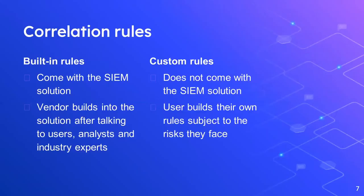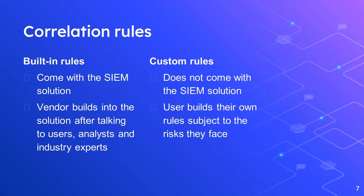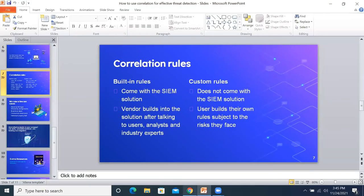Correlation rules are critical — your SIEM needs to know what patterns to look for. Once a particular correlation pattern is observed, your SIEM can alert you to take action right away. In an effective SIEM solution there are two types of correlation rules: built-in rules and custom rules. Built-in rules come with your SIEM solution — these are rules the vendor builds into the product after consulting customers, industry practitioners, and experts. Let's see how built-in rules work in Log360.